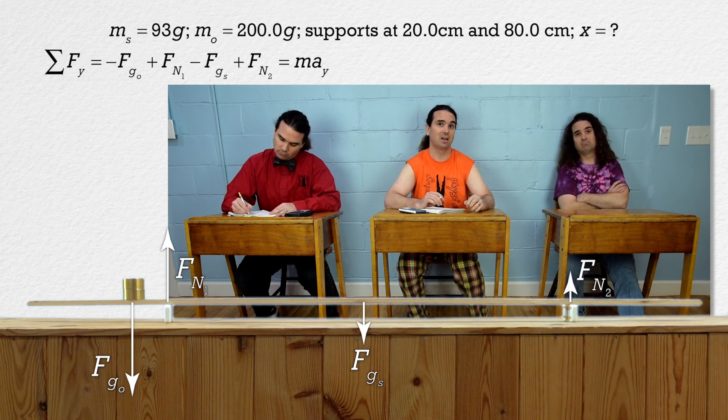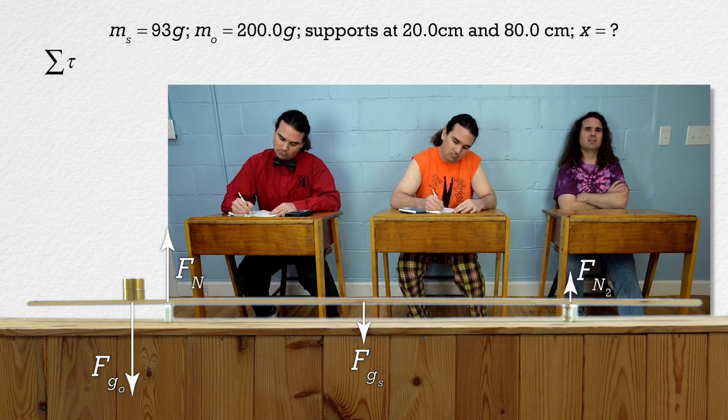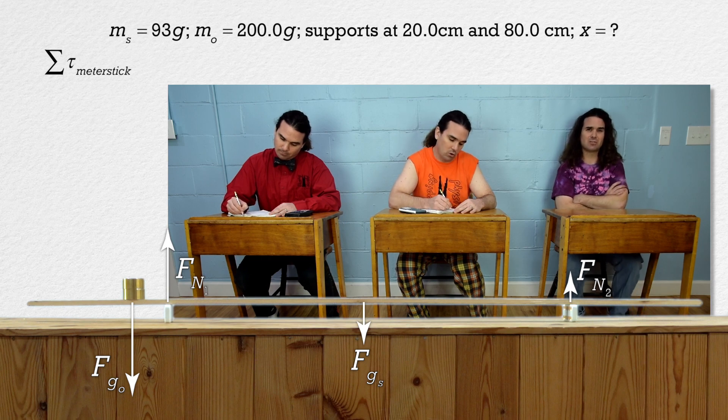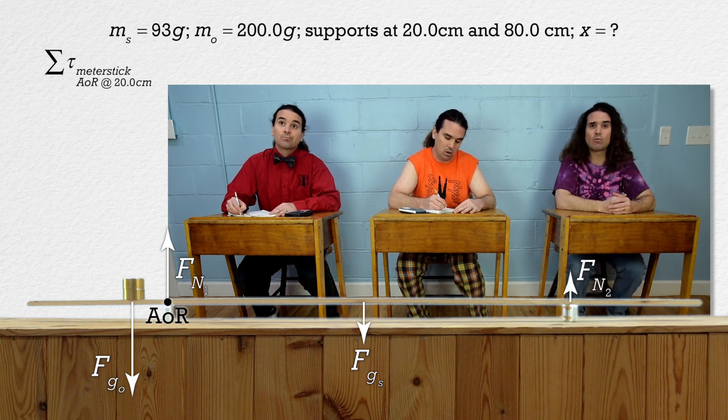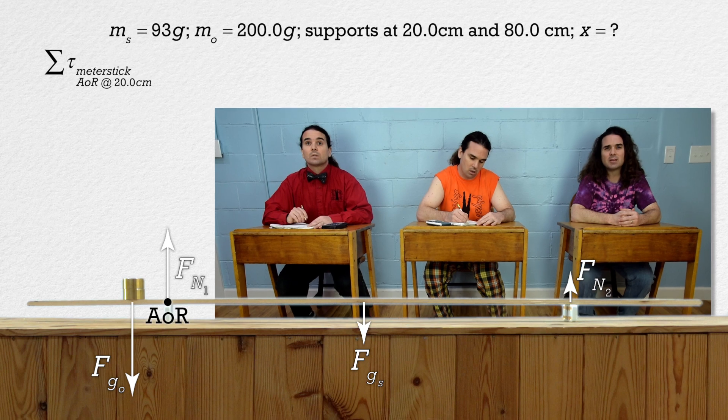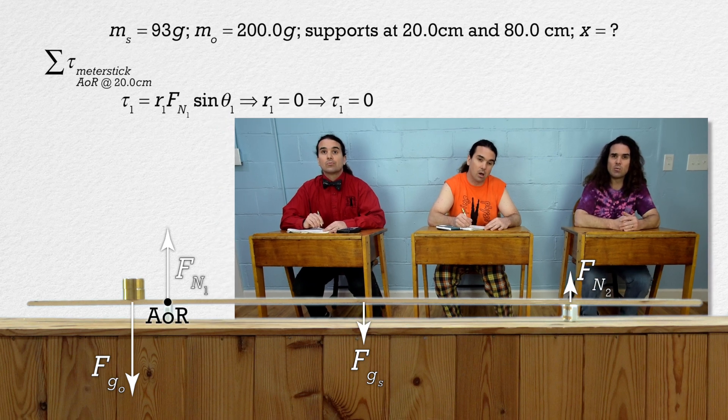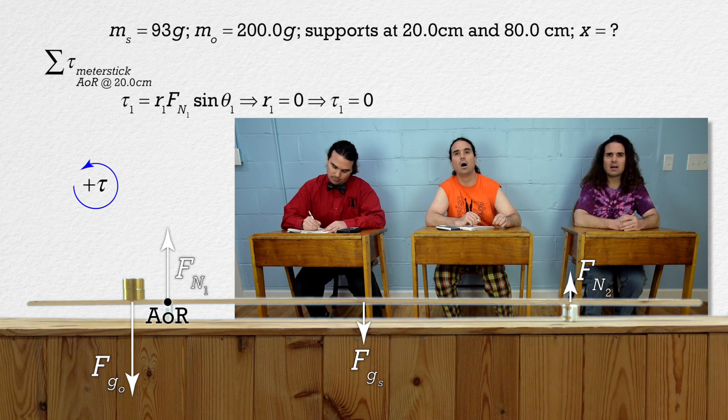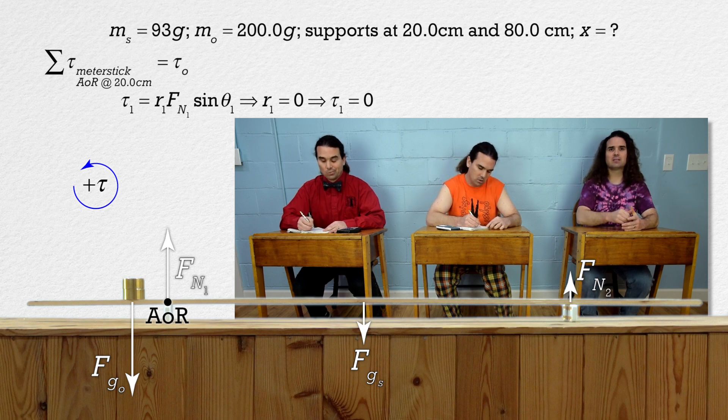Okay, let's start by summing the torques instead. Let's sum the torques acting on the meter stick with the axis of rotation at the 20 centimeter mark or where force normal one is because then the torque caused by force normal one will be zero. Like we usually do, let's make counterclockwise or out of the board positive. The net torque then equals the torque caused by the force of gravity acting on the object.